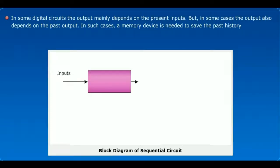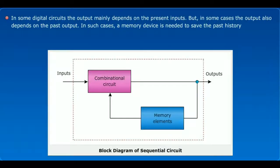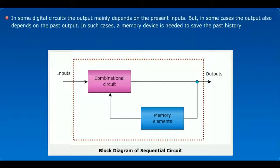In some digital circuits, the output mainly depends on the present inputs, but in some cases, the output also depends on the past output. In such cases, a memory device is needed to save the past history.